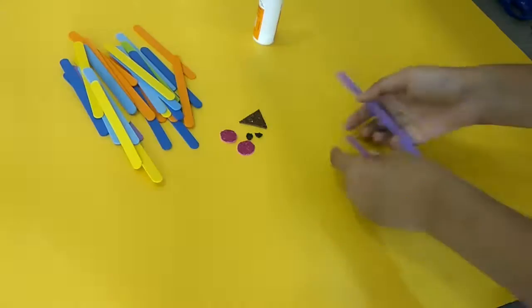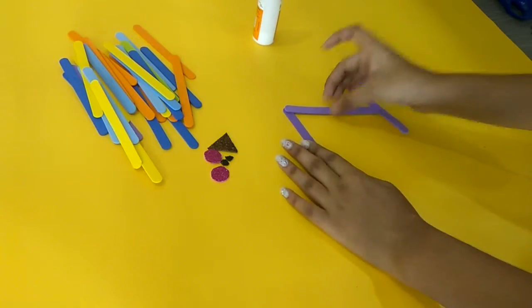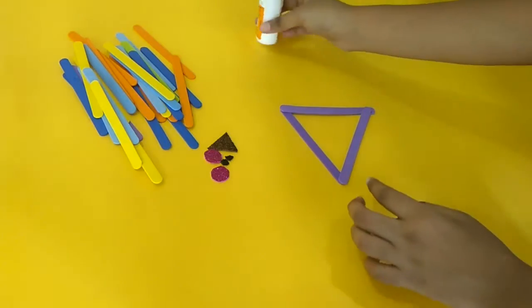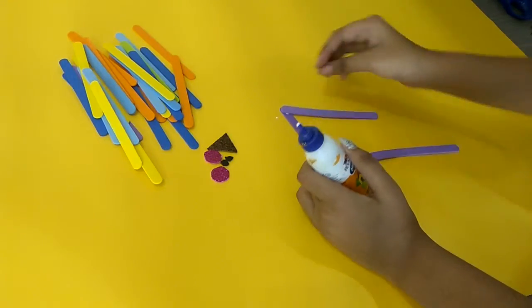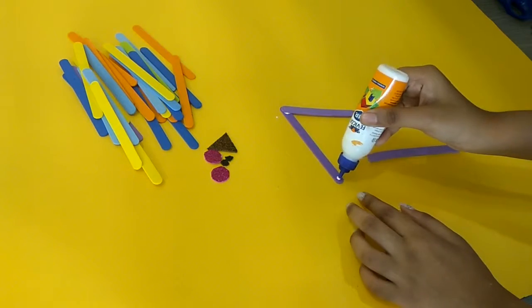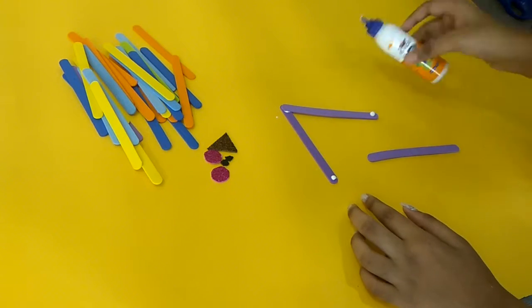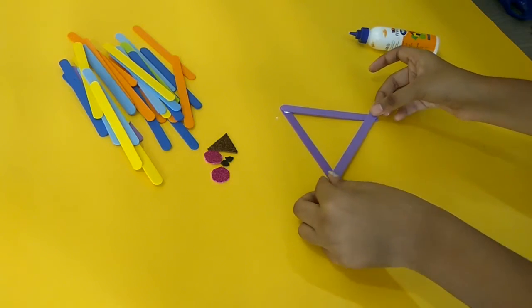Now for making a reindeer, take any three popsicle or ice cream sticks, whatever you are using, and glue it. Go ahead and glue it in the shape of a triangle.